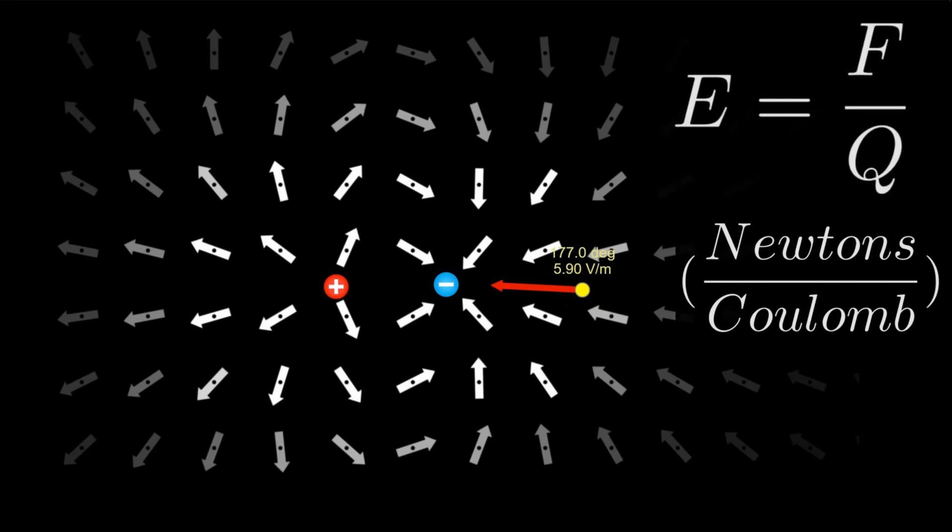Now let's keep this equation for electric field intensity in our back pocket for a minute. And in this electric field animation, let's build up a set of parallel lines of charges with one line being positive and one line being negative.